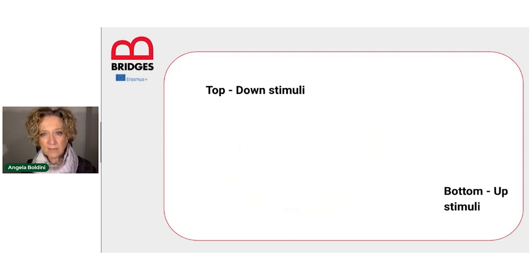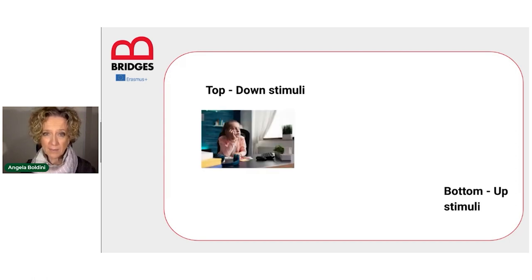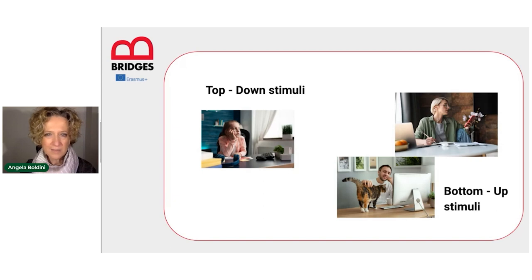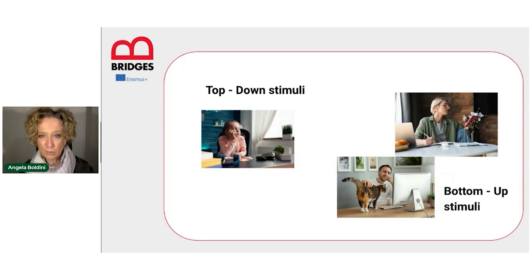Another thing to add is that our attentional system receives inputs from both what we call top-down and bottom-up stimuli. Top-down stimuli are basically internal stimuli, mainly our thoughts — those things, positive, negative, or neutral, that our brain is elaborating and seems unable to stop thinking about, especially if you are trying to concentrate on something else. Bottom-up stimuli are all the external stimuli that we are surrounded by: people claiming our attention, noises, voices, things happening in general, pets, phones. Our attention system is also in charge of finding a balance between top-down and bottom-up stimuli, deciding what is important and what is not, what to attend to, what to give priority to.